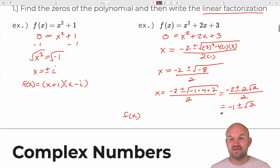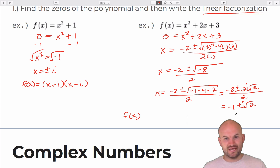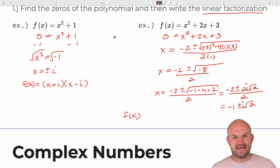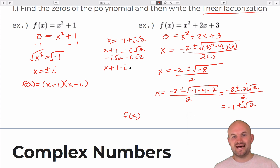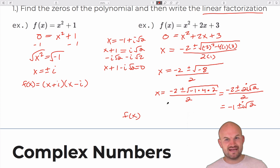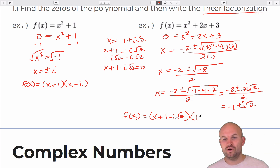Now we write the linear factorization. If x equals negative one plus i times the square root of two, then adding one to the other side and subtracting the square root of two gives us x plus one minus i times the square root of two equals zero. So that is one factor: x plus one minus i times the square root of two. The other factor, using the plus or minus, gives us x plus one plus i times the square root of two.